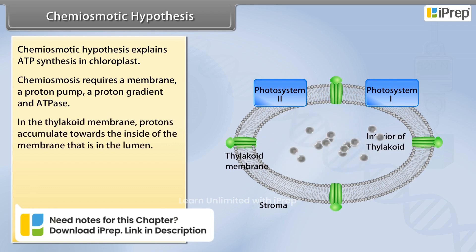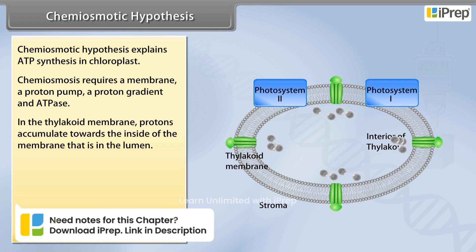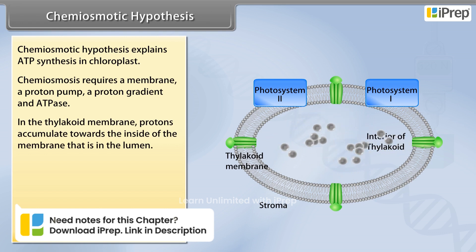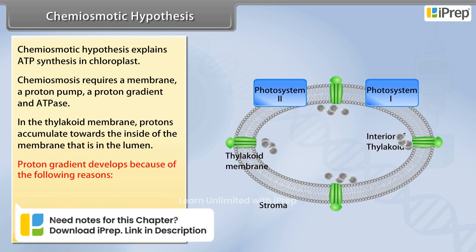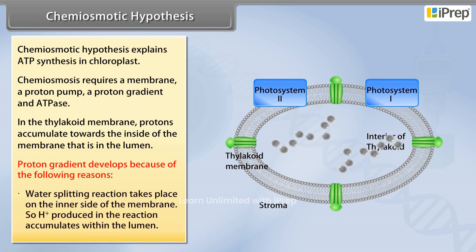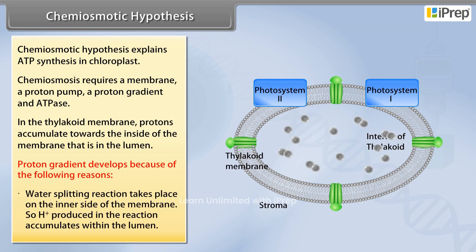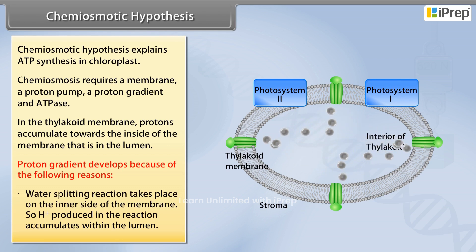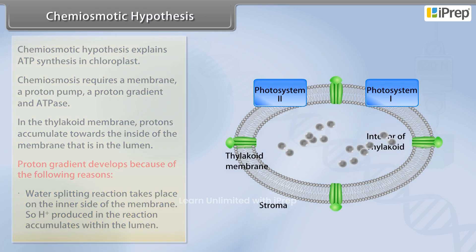In the thylakoid membrane, protons accumulate towards the inside of the membrane — that is, in the lumen. The proton gradient develops because the water-splitting reaction takes place on the inner side of the membrane, so hydrogen ions produced in the reaction accumulate within the lumen.